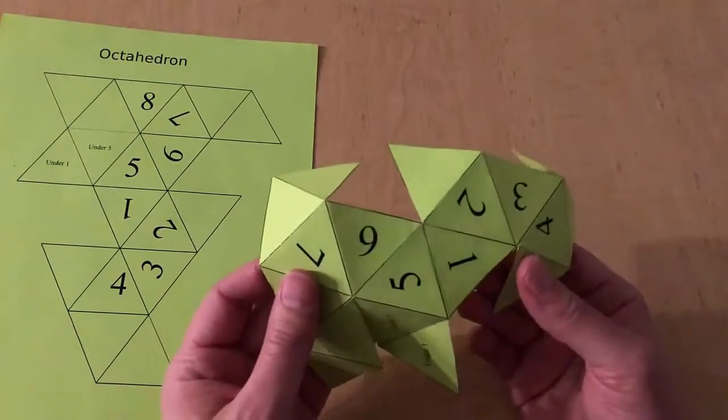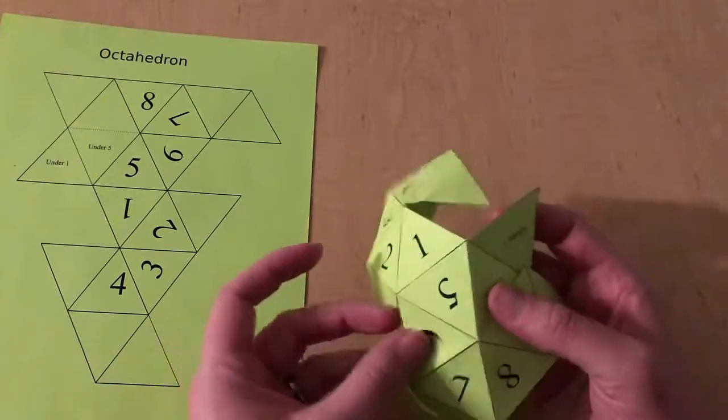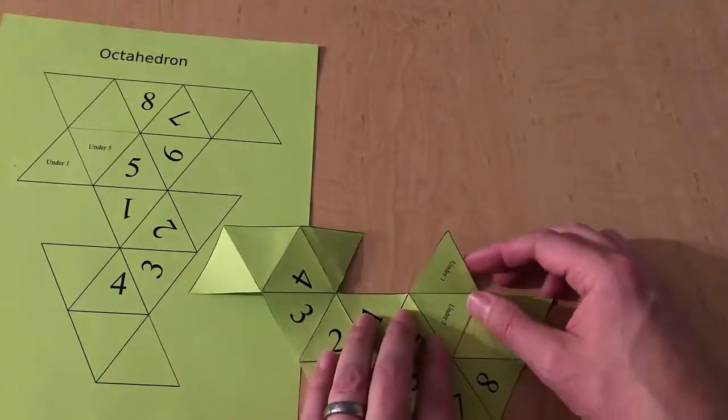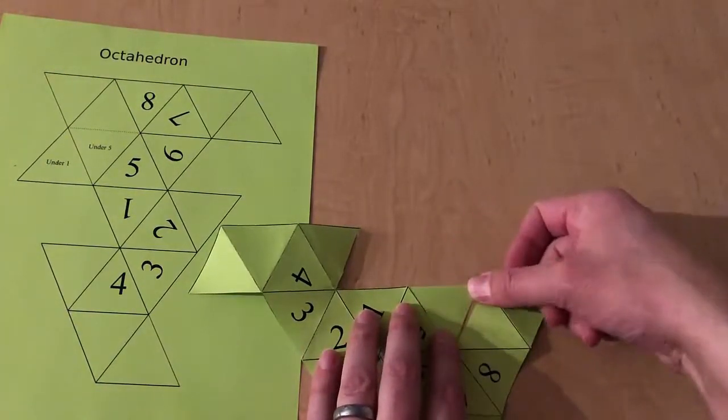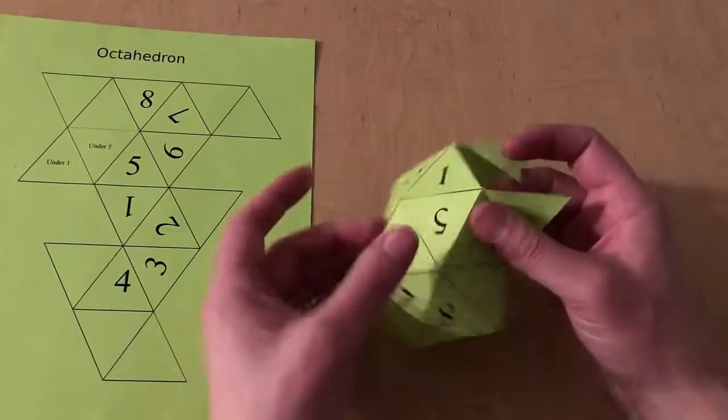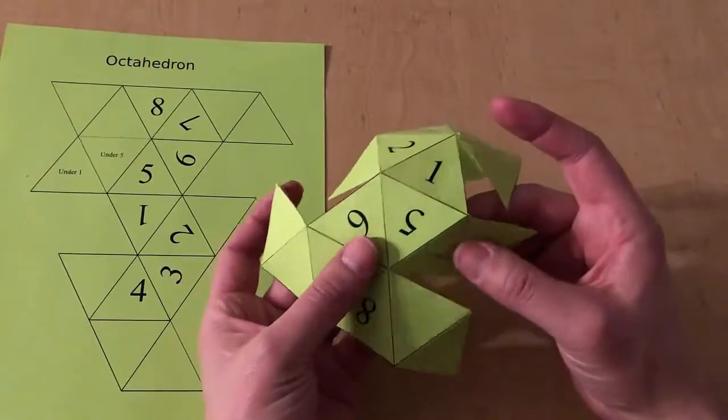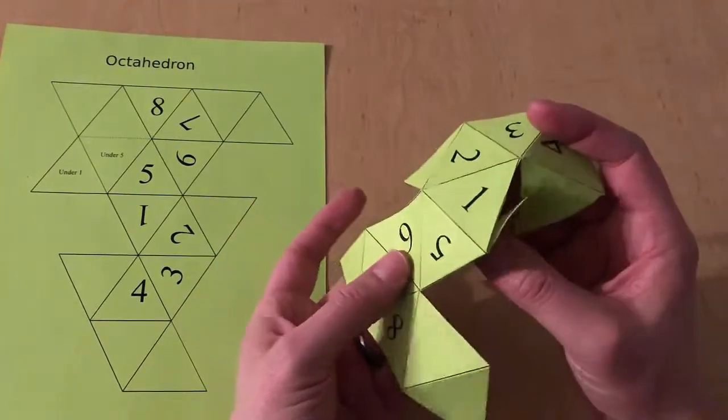You want to fold this one in the opposite direction. So the first thing I'm gonna do is fold these under - it says 'under five' and 'under one' - so those fold under faces five and one.